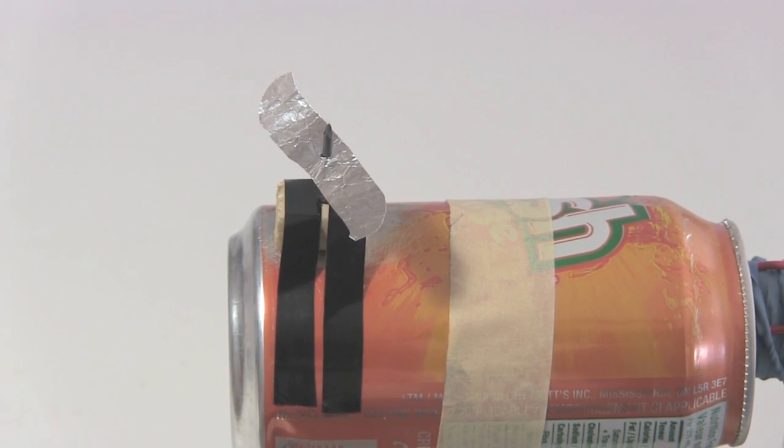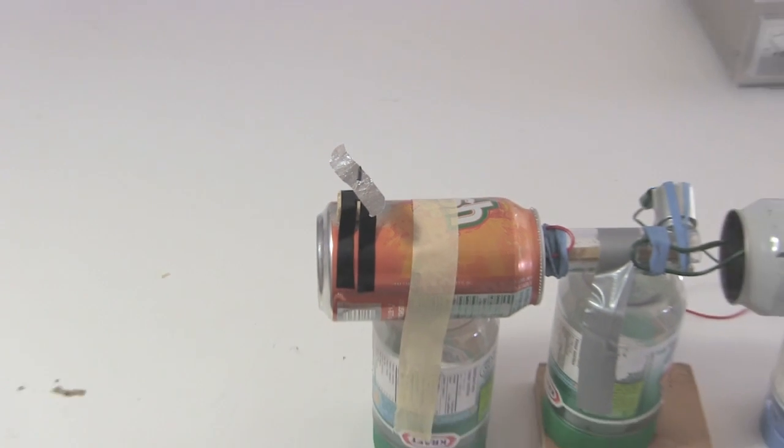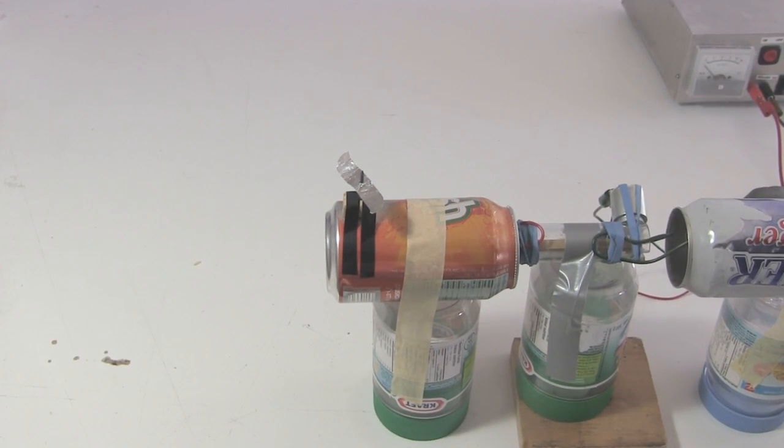And just to show you that this repulsion between Van de Graaff and rotor does exist, here's what happens to a piece of lighter aluminum foil sitting on the shaft.